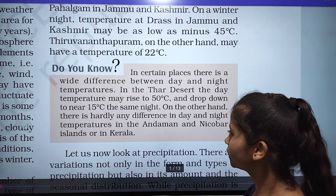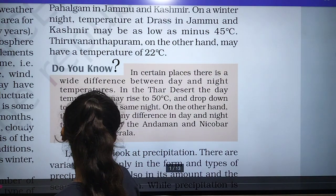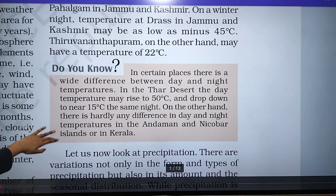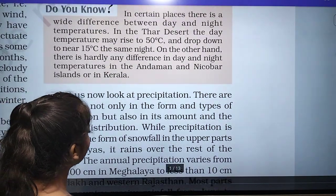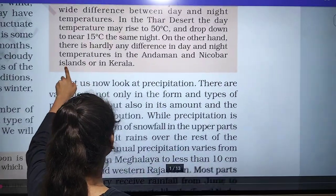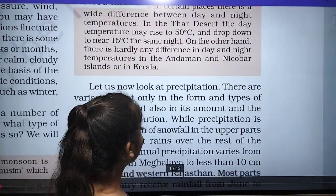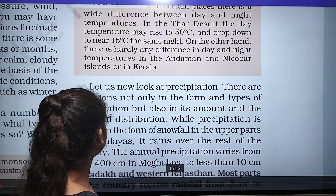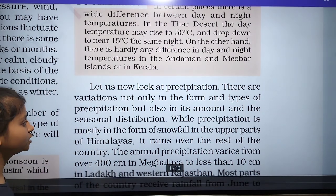On the other hand, there is hardly any difference in the day and night temperature in the Andaman and Nicobar Islands or in Kerala. Regarding precipitation, there is variation not only in the form and type of precipitation but also in its amount and seasonal distribution.